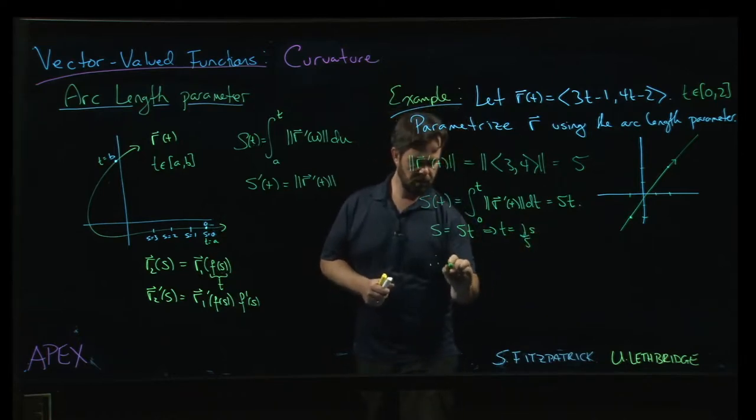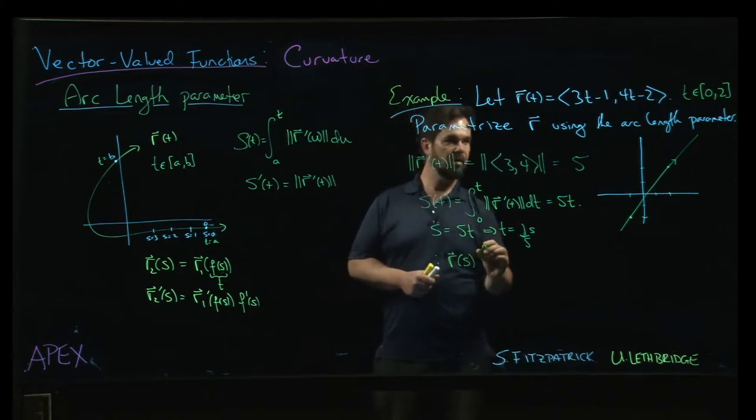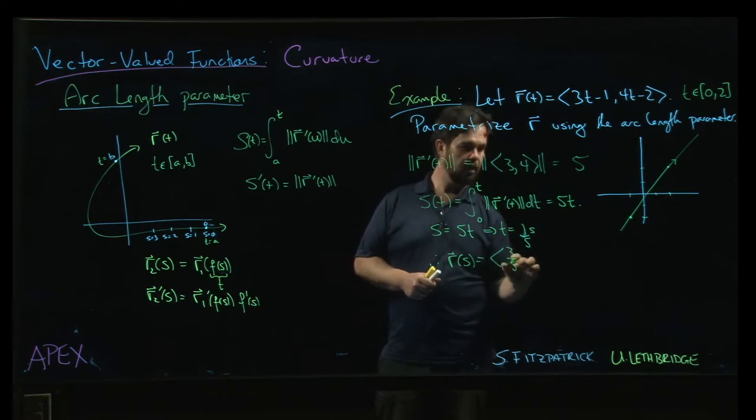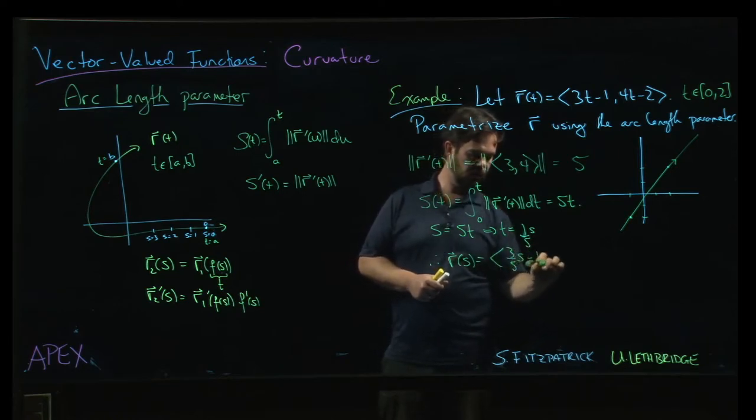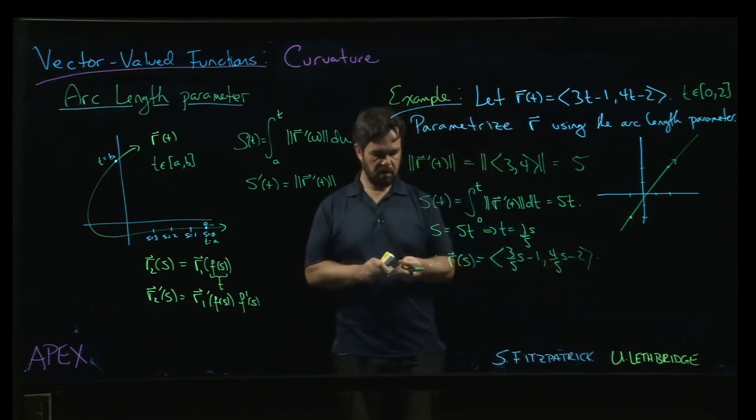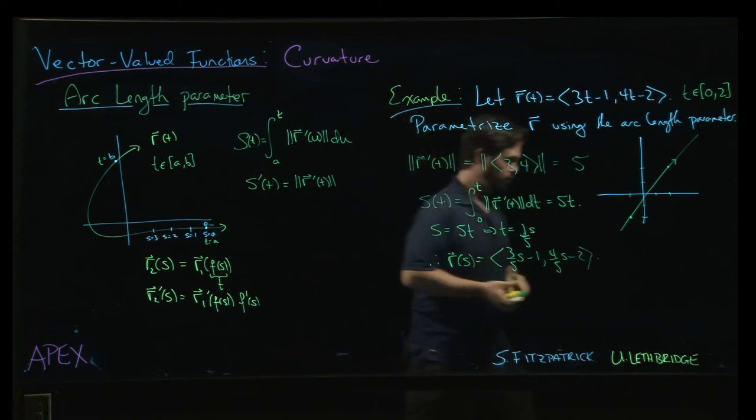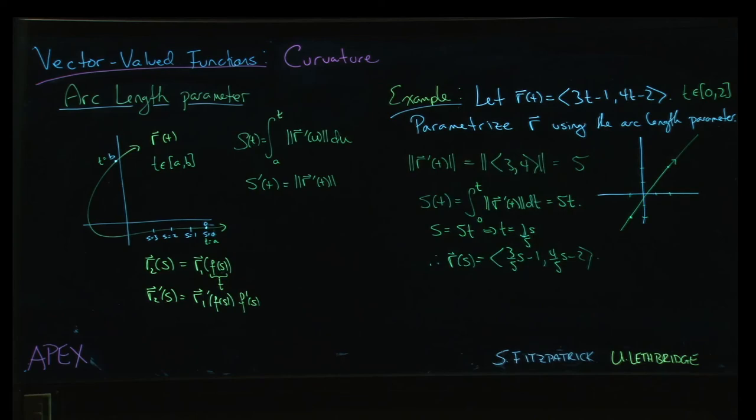And so if we wanted to write it in terms of the arc length parameter s, we could say this is going to be 3 over 5s minus 1 and then 4 over 5s minus 2. And now we've written it in terms of the arc length parameter.